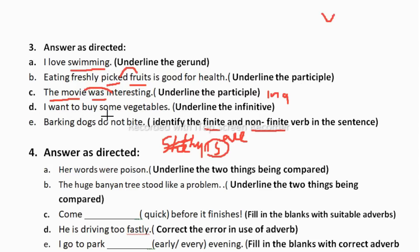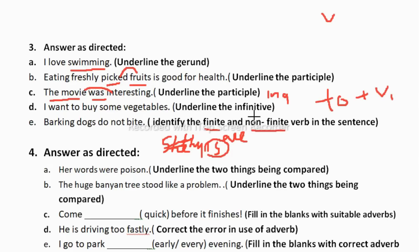'I want to buy some vegetables.' Infinitives are formed as 'to + V1.' Whenever you see 'to + V1,' that is your infinitive. Here 'to buy' — 'to' plus 'buy' (V1) — is the infinitive. Simply, if you see 'to + V1' in your exam, mark it as an infinitive.